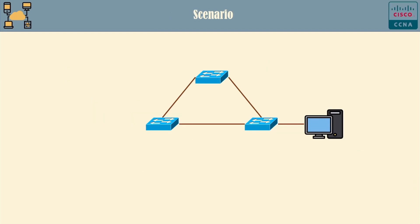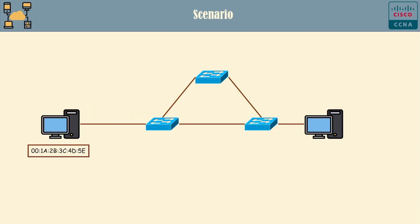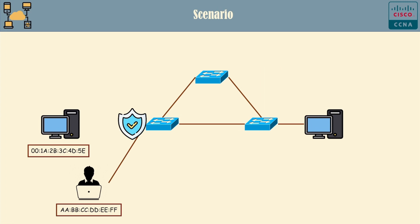Here is a network diagram. There is a PC currently connected to an access port on this switch. Let's assume that the company's policy is to prohibit personal devices from being plugged into the company's network. Suppose an employee unplugs the cable from the company's PC connected to the switch and then plugs in their laptop into this access port to access the company's sensitive data.